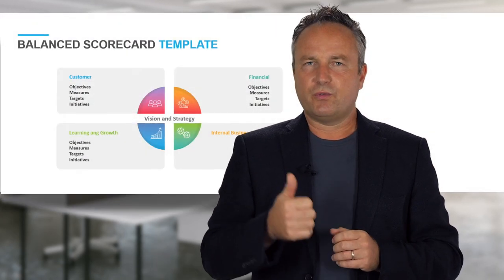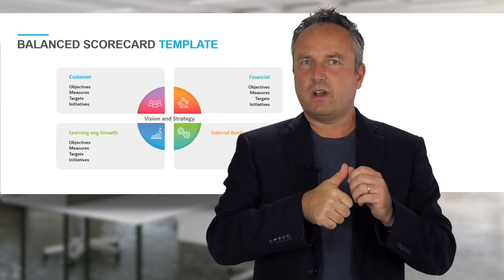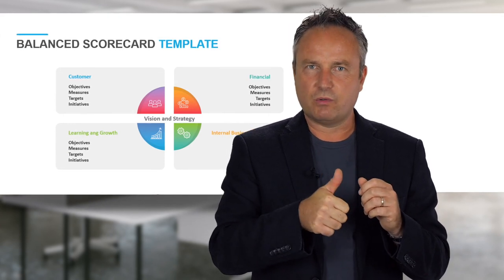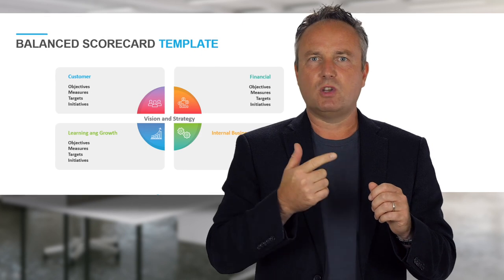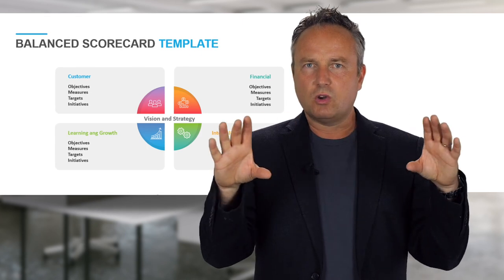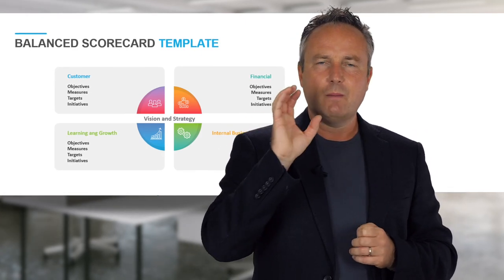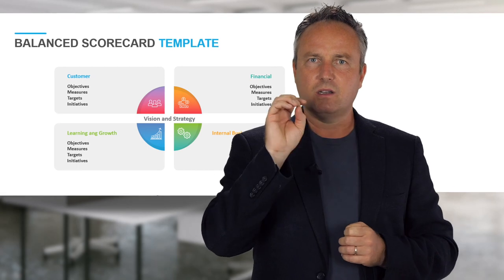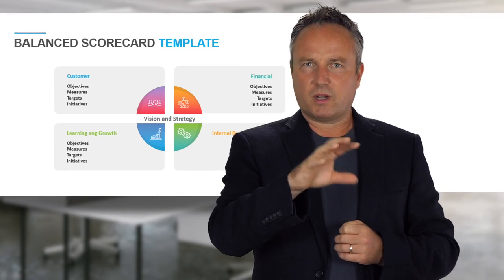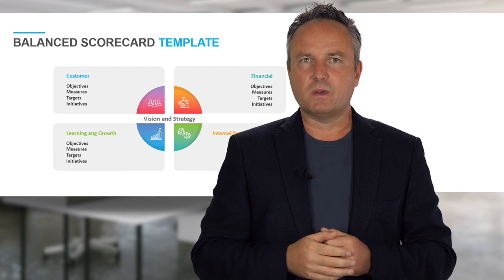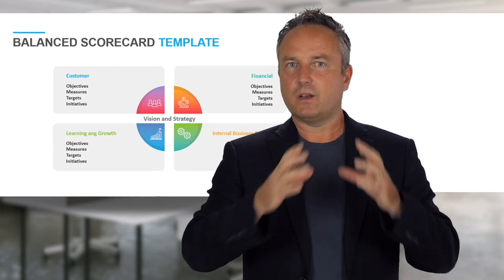A strategy map is split into four perspectives. First, you identify your financial goals — what you want to achieve in terms of profit margins and revenue. Then you look at your customer perspective, where you define the markets and products you want to sell in certain markets, and the customer deliverables you want to deliver in order to make money.